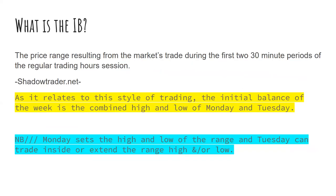As it relates to the initial balance, which comes out of the opening range — according to Shadow Trader, it's the price range resulting from the market's trade during the first two 30-minute periods of the regular trading session. In this style of trading, the initial balance is the combined high and low of Monday and Tuesday. So if Monday sets the range, Tuesday may have extended a little higher or lower. Whatever the highest high and lowest low between Monday and Tuesday is, that becomes the initial balance for the week. You already have a day one and day two set up for a day three setup.